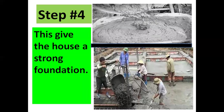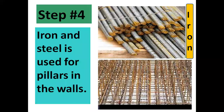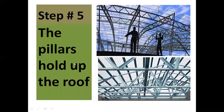Step number four: this gives the house a strong foundation. First step they dig the hole, then they put concrete into it, and after putting concrete in, they give a strong foundation to the house or to the building. Step number five: the pillars hold up the roof. Strong pillars use steel and iron for making a strong roof.